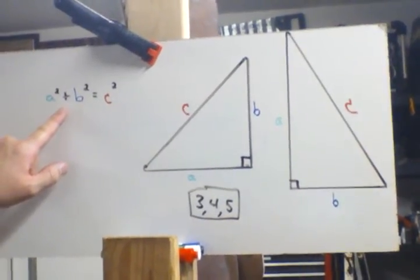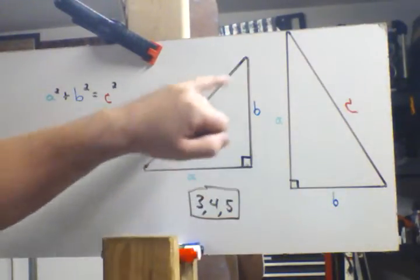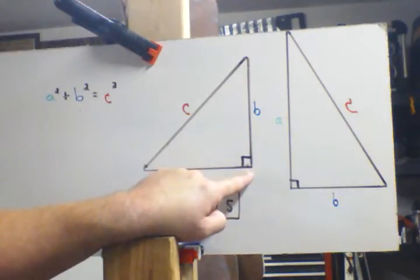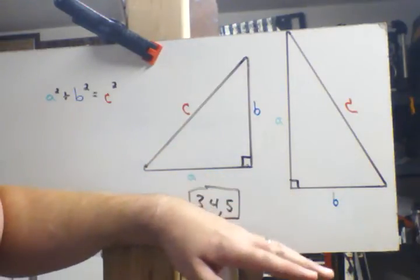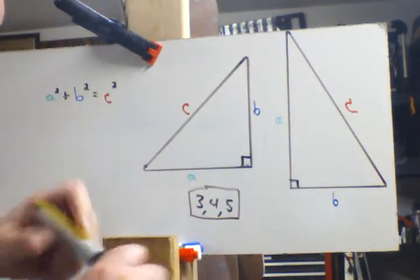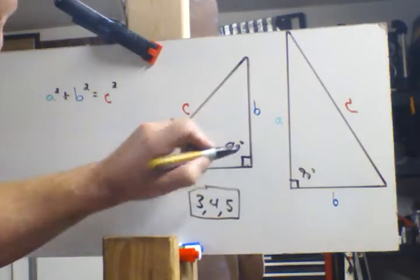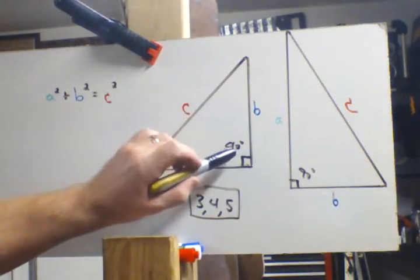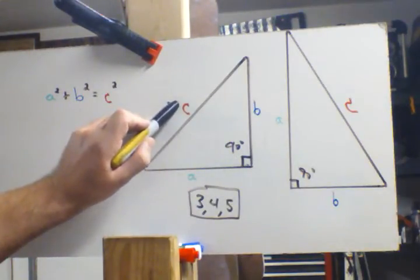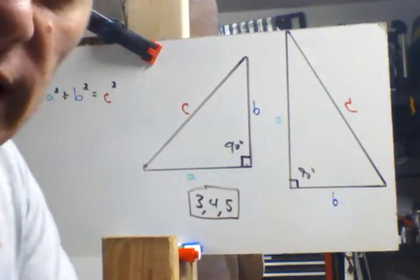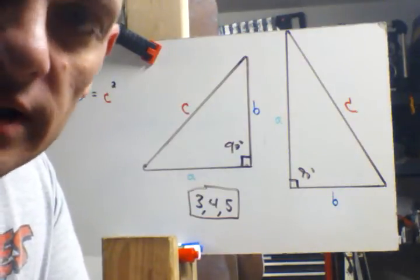I'll zoom in a little bit so you can see better. A squared plus b squared equals c squared. Now if you look at your triangle, notice that it has a right angle, that's what this little square part is, at a 90 degree angle right there. The angle across from that is always going to be labeled as c.